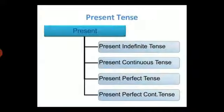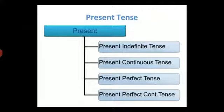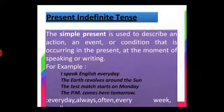Now let us know about each and every tense. As we know, there are four tense forms in each tense. So in present tense also there are four tenses: present indefinite, present continuous, present perfect, and present perfect continuous. Let us now learn about present indefinite or present simple tense.